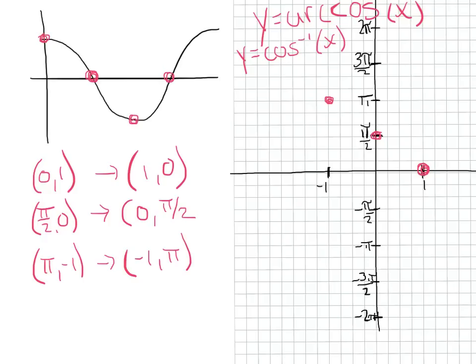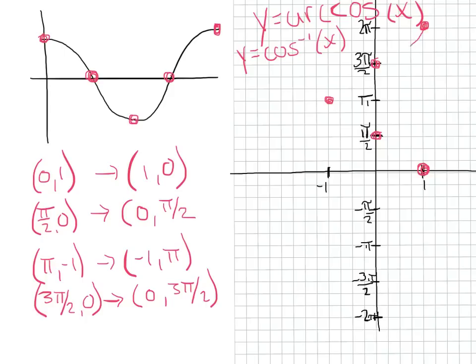The fourth most famous point is (3π/2, 0), whose inverse is (0, 3π/2). And then (2π, 1), whose inverse is (1, 2π). We connect these with a nice smooth curve, and then predict where it goes next — it comes back down to negative pi over 2, dips, crosses the y-axis, and finishes up. That's the full arc cosine inverse graph before restricting.